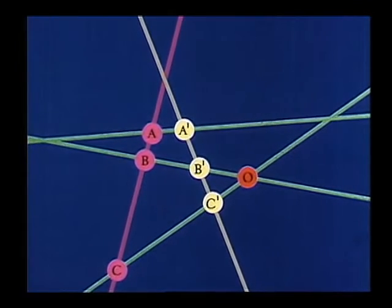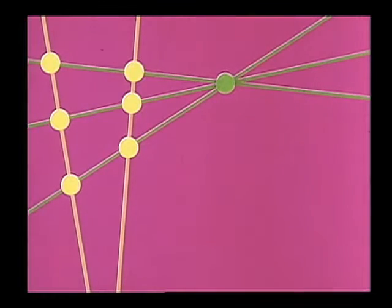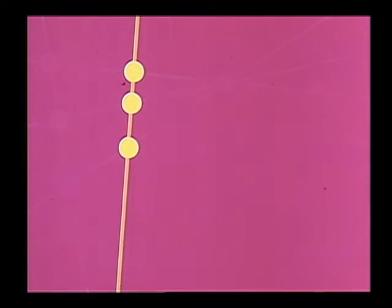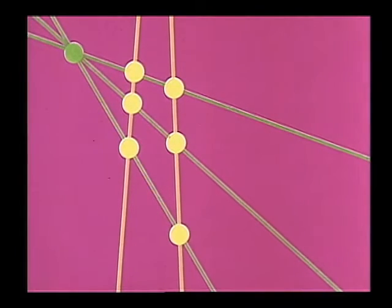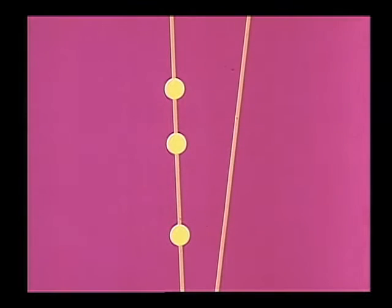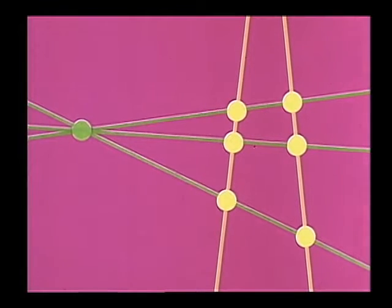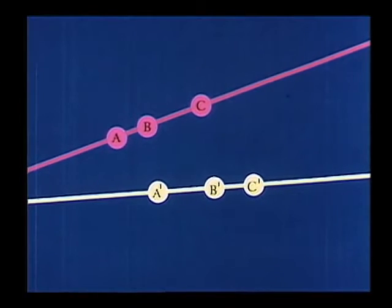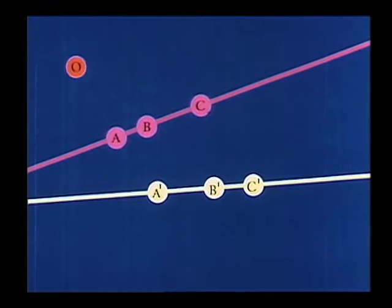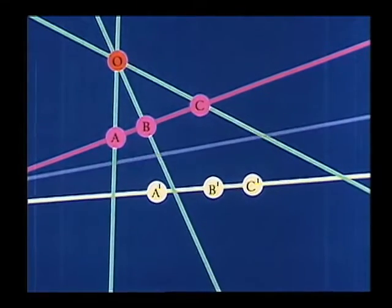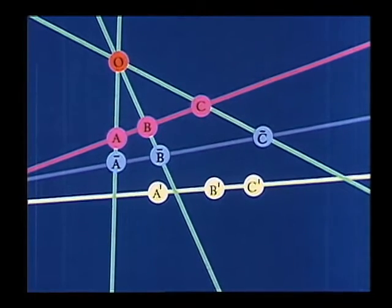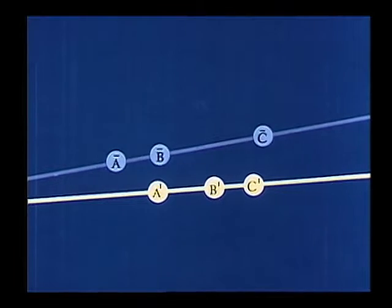But what about a succession or product of perspectivities? If a product of two perspectivities is tried, the three given points of the initial range are mapped onto an auxiliary range. But this still leaves the problem of mapping one triple onto another.